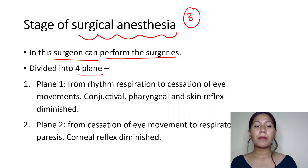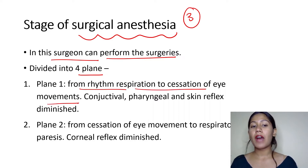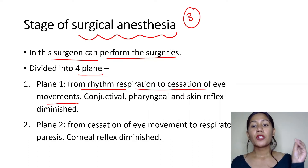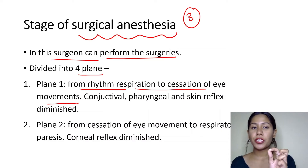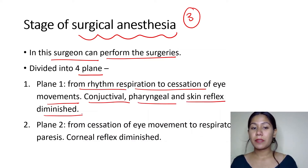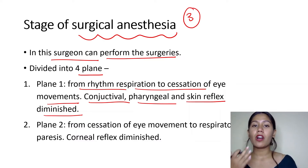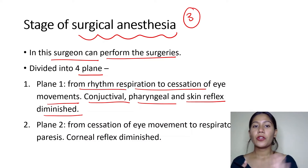Plane 1 goes from rhythmic respiration to cessation of eye movements. Eye movements will be reduced but not fully stopped. The conjunctival, pharyngeal, and skin reflexes are diminished in this plane. The pharyngeal reflex is important — it is lost in stage 3 of anesthesia.